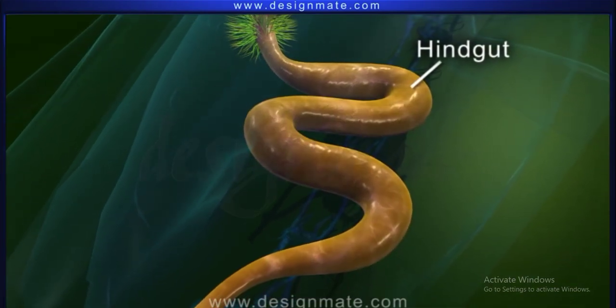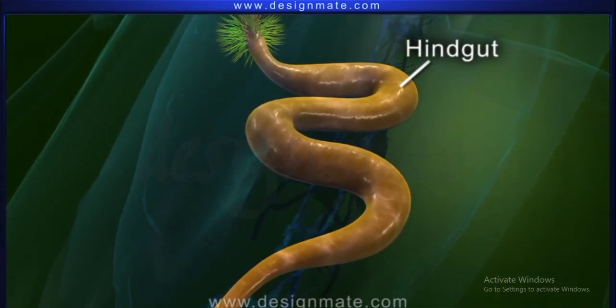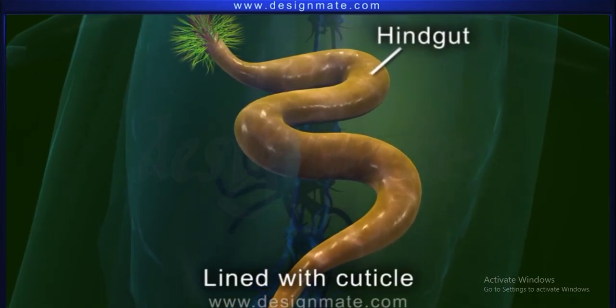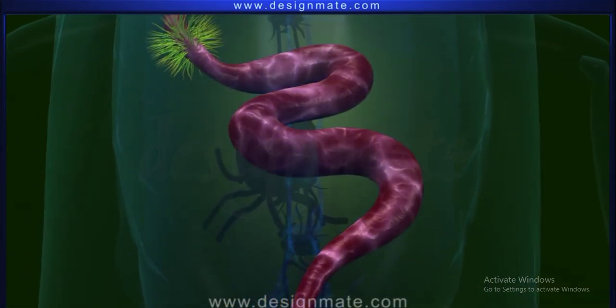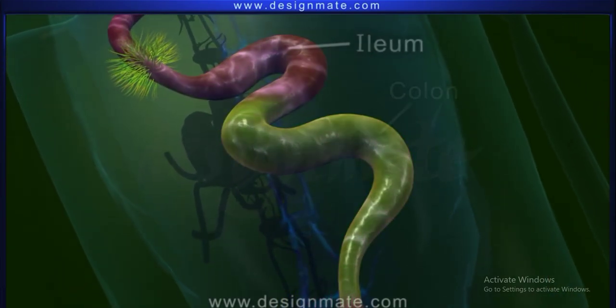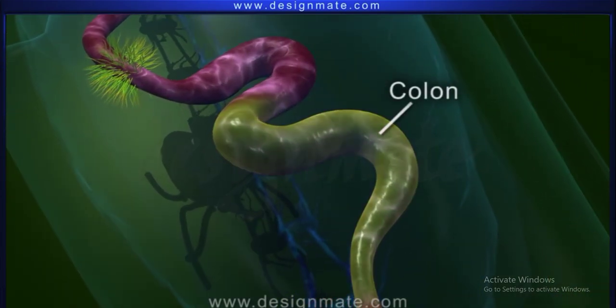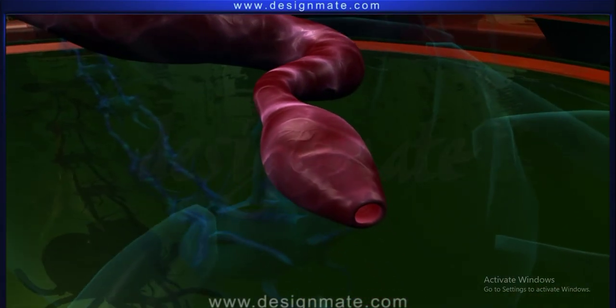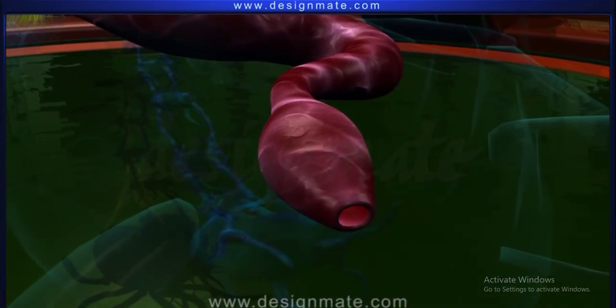The hindgut is slightly broader than the midgut and is lined with cuticle internally. The proximal region of the hindgut, the ileum, is followed by a coiled colon which leads to the sac-like rectum.